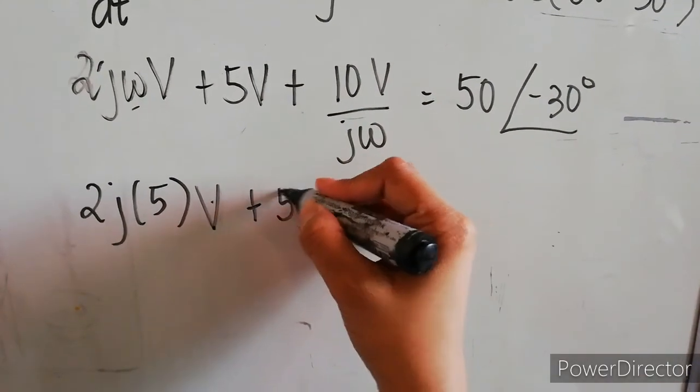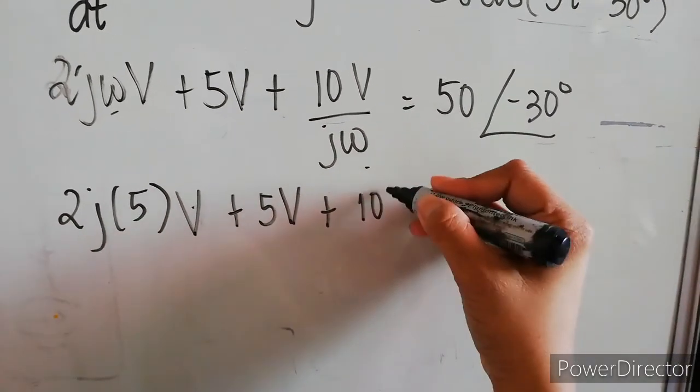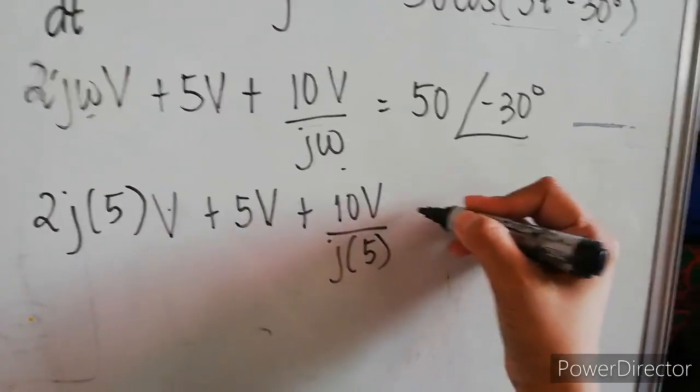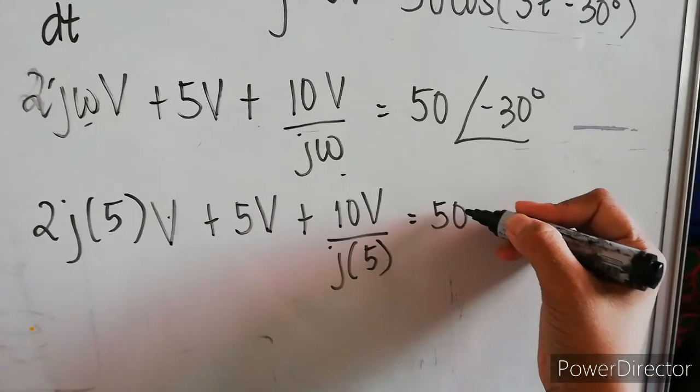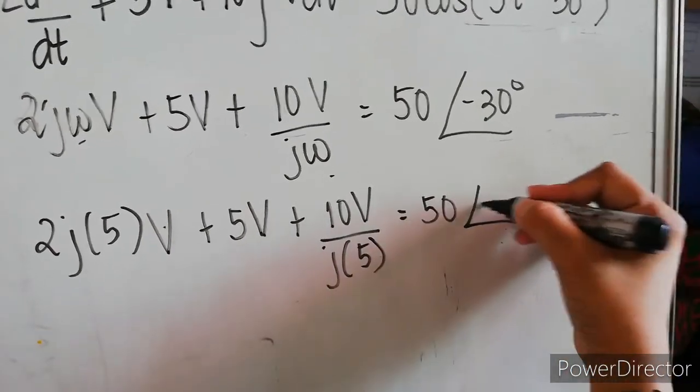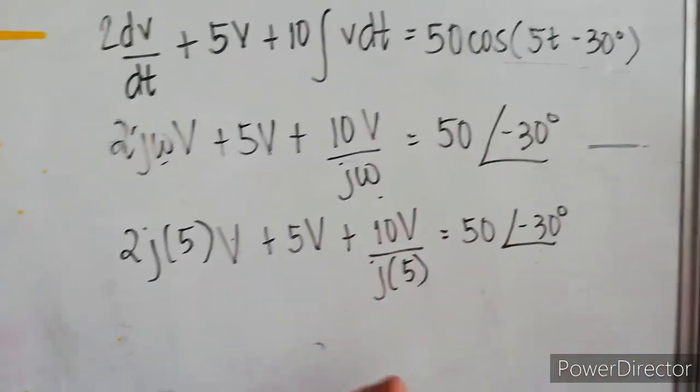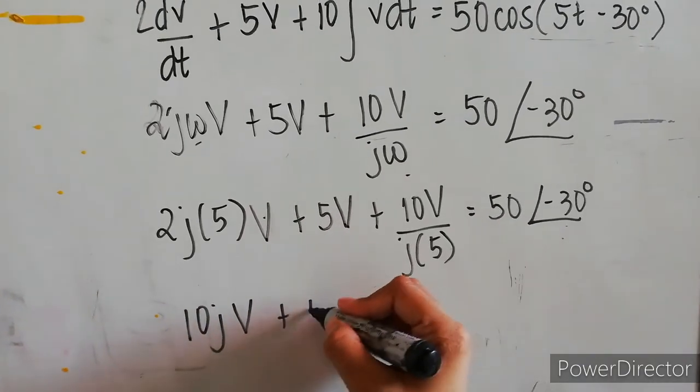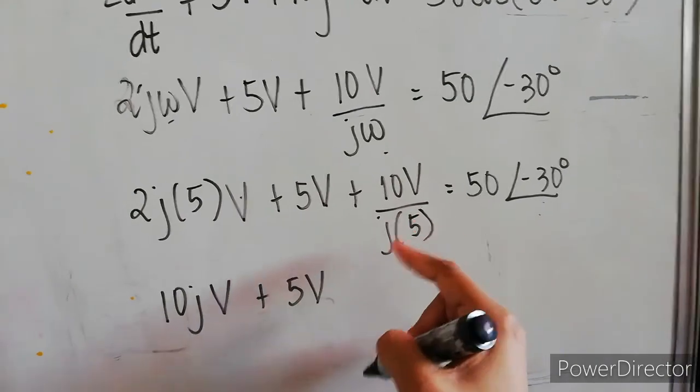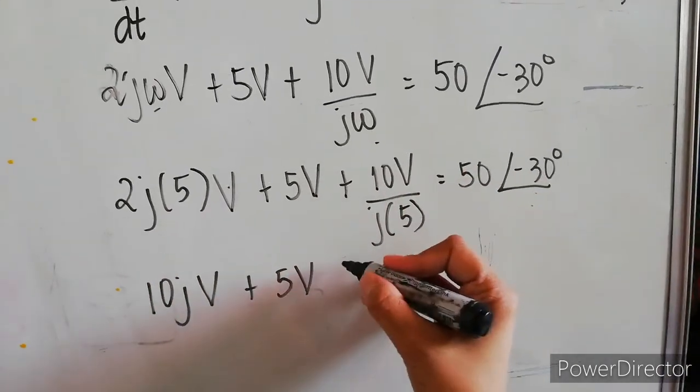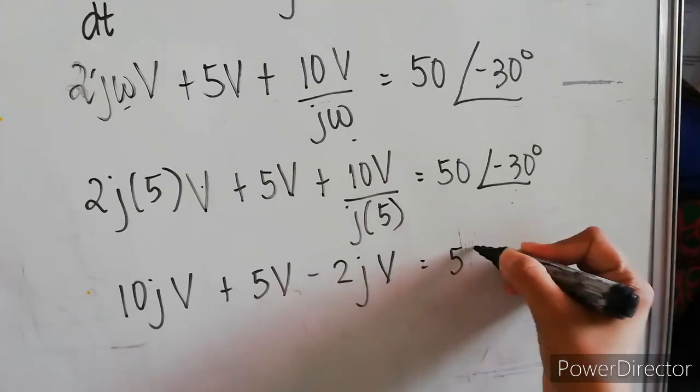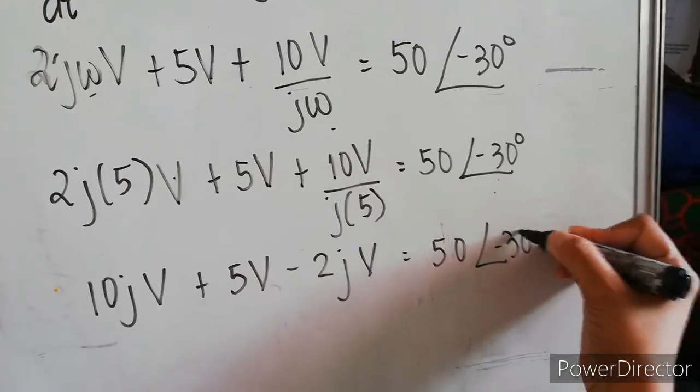Now, let's just simplify. We have 10jV + 5V, then 10/5, then let's put j in the numerator. We have -2jV = 50∠-30°.